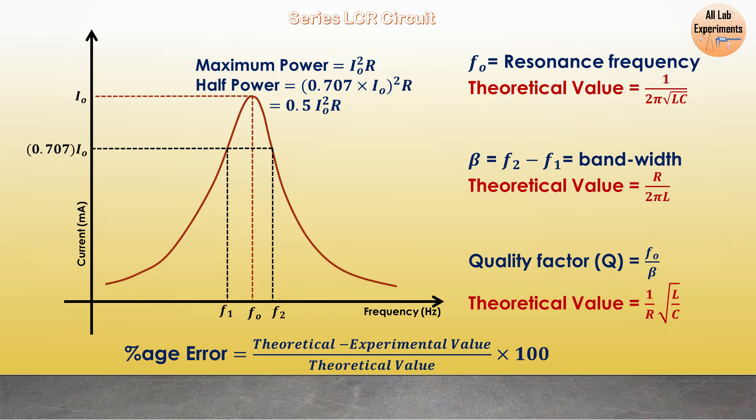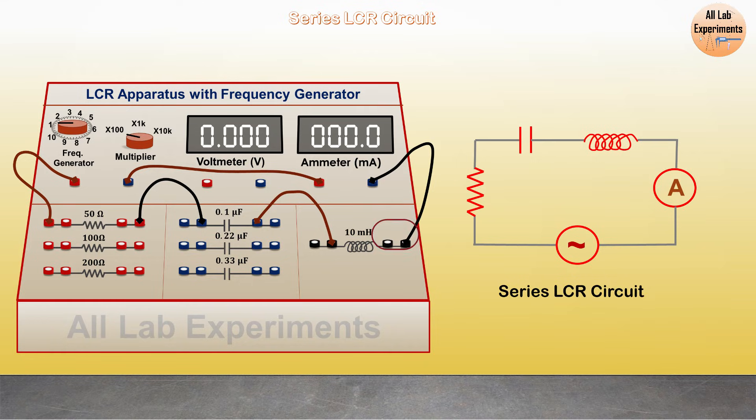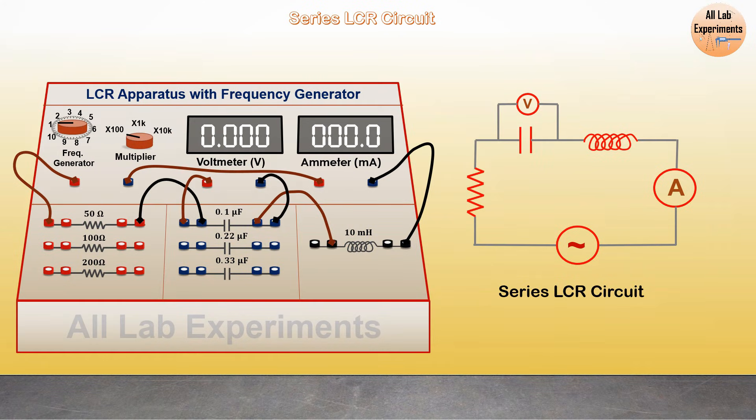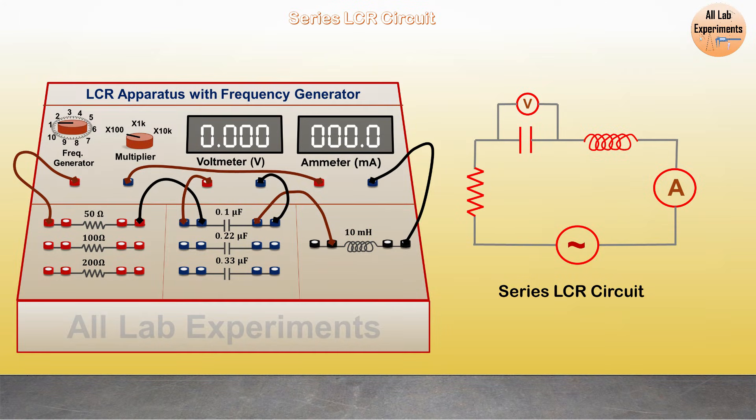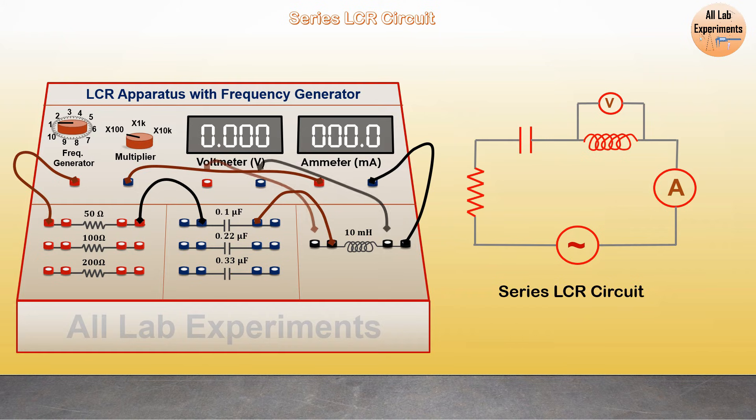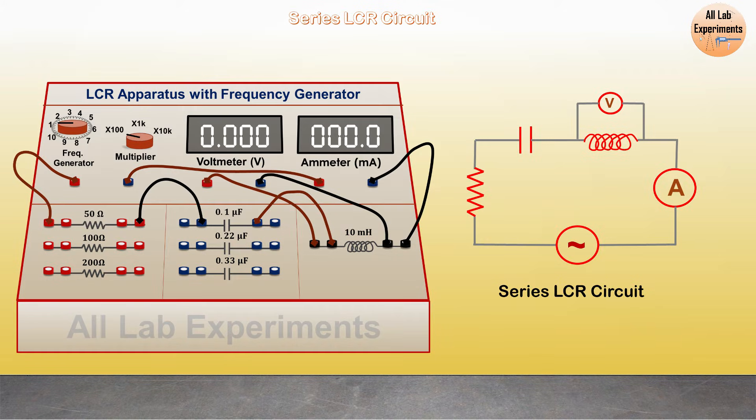You must have observed that we have not used this voltmeter in this experiment. If you place this voltmeter across this capacitor, in that case you can measure the voltage drop across this capacitor with frequency. Similarly connect this voltmeter parallel to inductor coil and observe its readings with frequency.